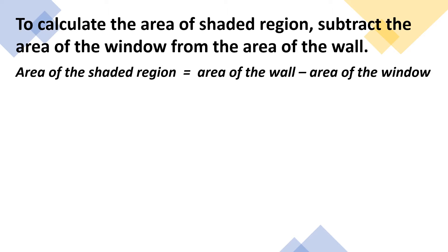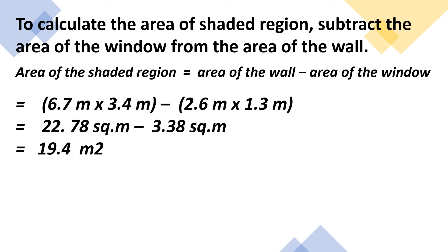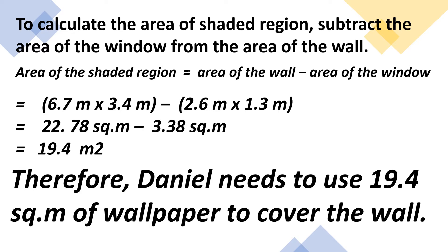Area of the shaded region is equal to area of the wall minus area of the window. So we have 6.7 meters times 3.4 meters as the area of the wall, minus 2.6 meters times 1.3 meters as the area of the window. We got 22.78 square meters for the area of the wall, subtracted by the area of the window which is 3.38 square meters. When we subtract them, we get 19.4 square meters. Therefore, Daniel needs to use 19.4 square meters of wallpaper to cover the wall.